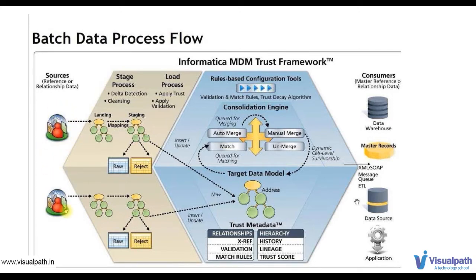Now, how does the data generated at the source system get into the Informatica Hub Console? Comparing to Informatica PowerCenter, PowerCenter can read data from any kind of source system — flat files, relational tables like Oracle, Teradata, or any other. But Informatica MDM does not have any option to read data from any kind of source system directly.